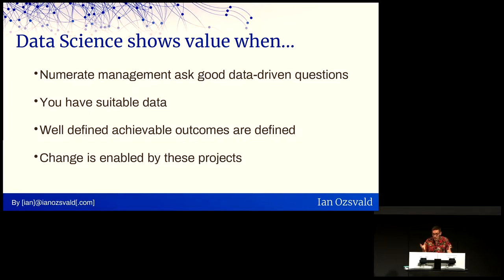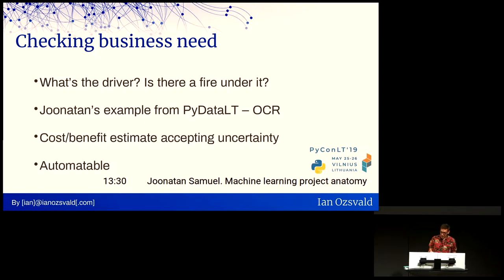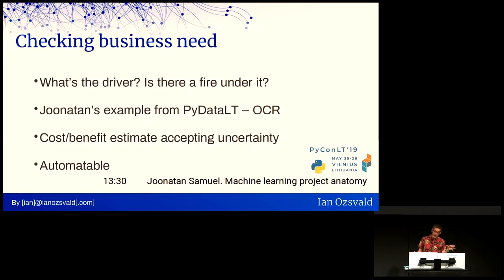We need well-defined achievable outcomes — sensible outcomes that let us bite off a sensible problem and deliver something that works and then incrementally improve it. Change has to be enabled: we have to have permission not just to hear that we want change, but to actually deliver change, change an organization, change a workflow so that things get accepted and put out into production. We need to check the business need. As an engineer approaching this problem, you need to do something that delivers value inside the organization. It's not good enough to do it because it's cool — it matters that you can deliver change inside the organization.